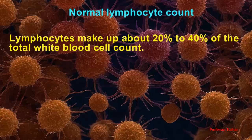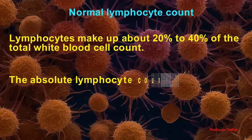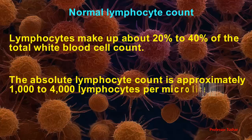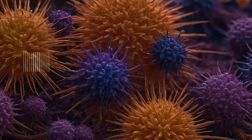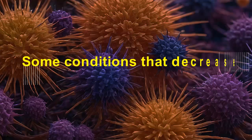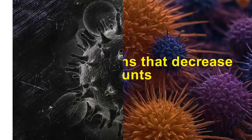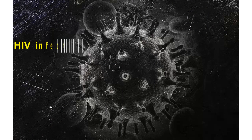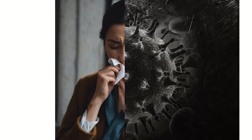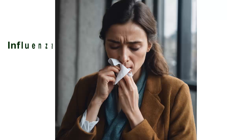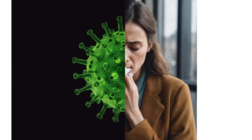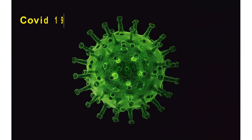Normal lymphocyte count: lymphocytes make up about 20 to 40 percent of the total white blood cell count. The absolute lymphocyte count is approximately 1,000 to 4,000 lymphocytes per microliter of blood. Some conditions that decrease lymphocyte counts include HIV infection, influenza, and COVID-19.